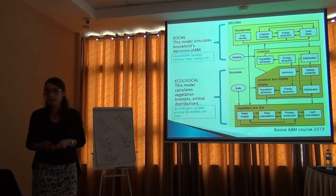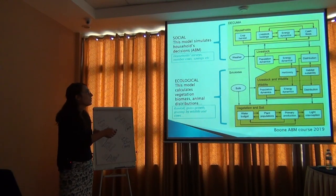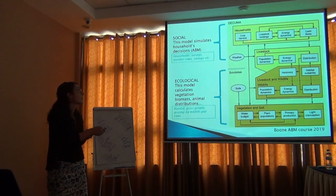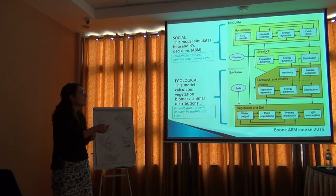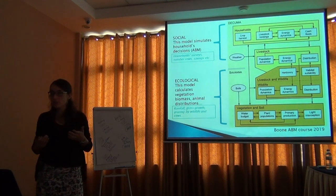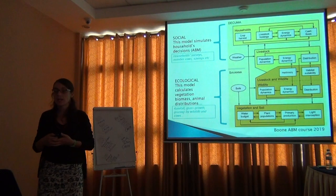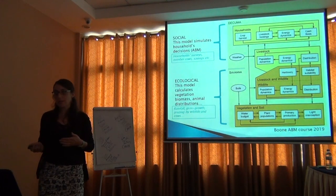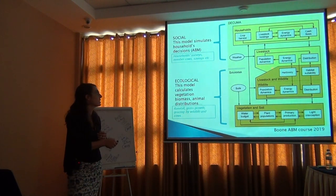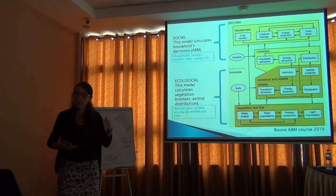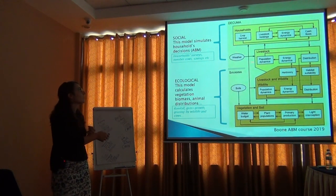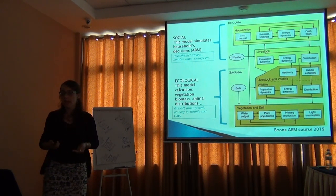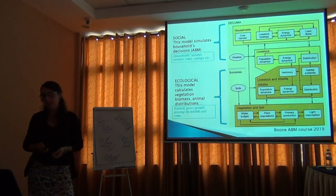Then they realized it would be interesting to see how changes in the environment were affecting the way people made decisions. That's when they built the agent-based model — called CUMA — where they created a number of households, each with livestock. Depending on their livelihood, they eat some livestock, sell some, and decisions depend on how much grass and fodder is available. They connected these two models — the social and the ecological — to predict what might happen if the area were fenced.